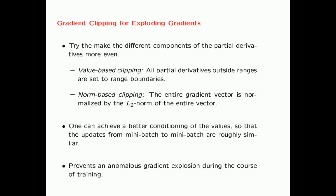For the exploding gradient problem, you also have some fixes. One fix is to make the components of the different partial derivatives more even with value-based clipping, where all partial derivatives outside a particular range are set to the range boundary. Norm-based clipping is different — you normalize the entire gradient vector by the L2 norm of the vector. By doing these things, you can achieve better conditioning so that the updates from mini-batch to mini-batch are roughly similar, preventing anomalous gradient explosions during training.